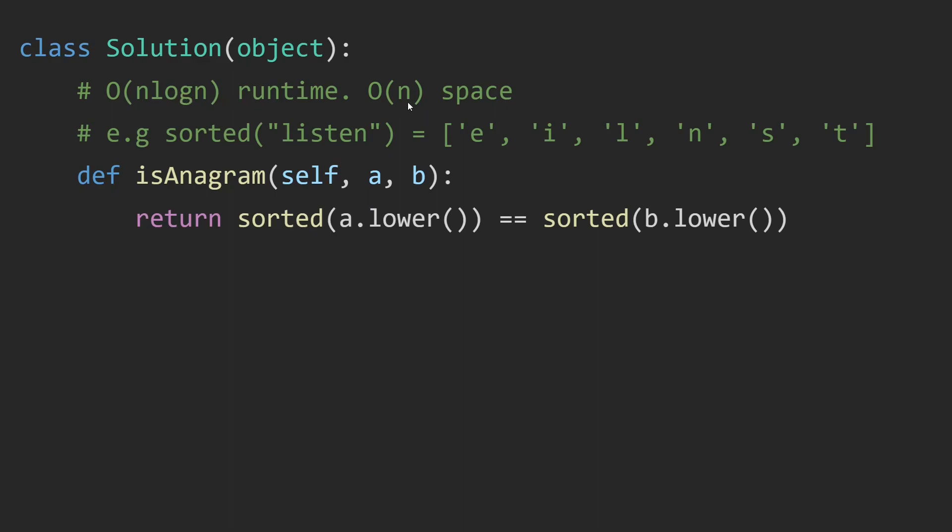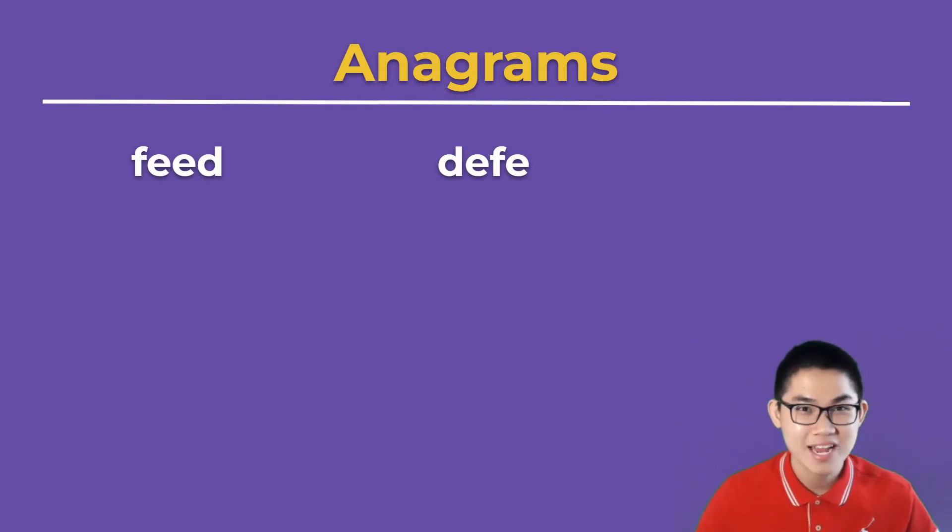The runtime of this code is O(N log N) due to the sort function, and the space is O(N) because the sorted function will turn the string into a list of letters. What if I tell you there is a better and faster solution?